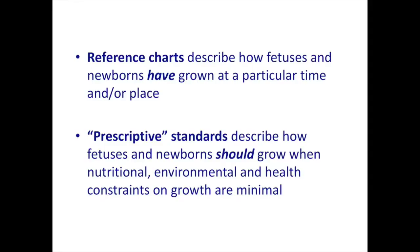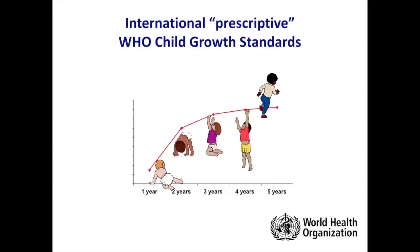Nowhere has this been used better than in child growth with the WHO child growth standards. The study was done in 1996 and the standards were released in 2006. Mercedes de Onis at the WHO set up this study involving around 8,000 babies in six countries. These babies were born to healthy mothers at full term, were breastfed for six months, and were followed for the first five years of their life. Under those conditions, the growth trajectory of children was remarkably similar.